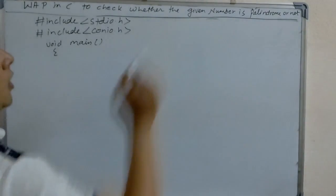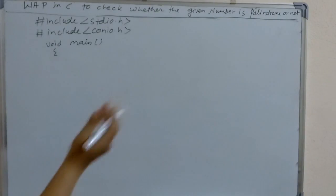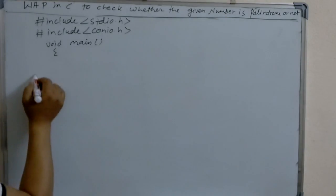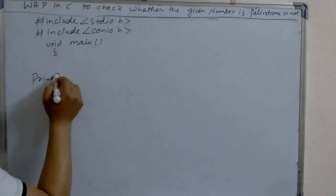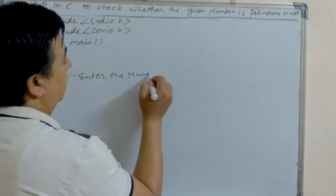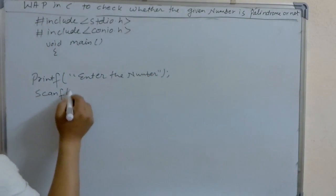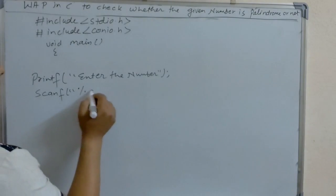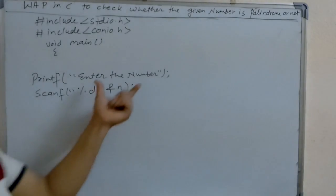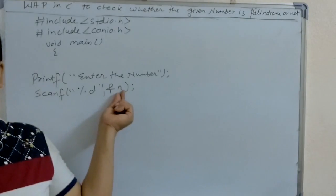We have to check whether the given number is palindrome or not. That's why I ask the user to enter the number and read it through the keyboard using printf and scanf with format specifier %d. Whatever number the user enters is stored in the variable n.